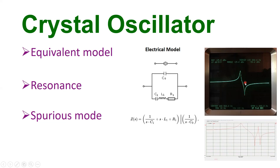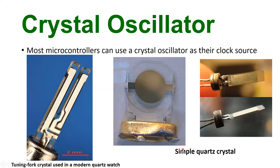The crystal vibrates in a specific mode, but due to spurious modes — as we saw earlier, there are multiple vibration modes — the force can excite the crystal not only at the main resonance but also at higher-frequency modes. This is why additional resonances and anti-resonances appear at higher frequencies in the impedance plot, each associated with a specific resonance mode.